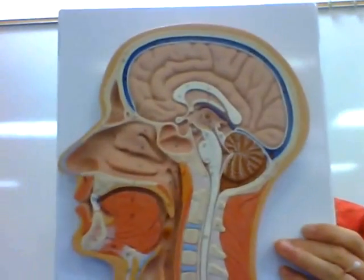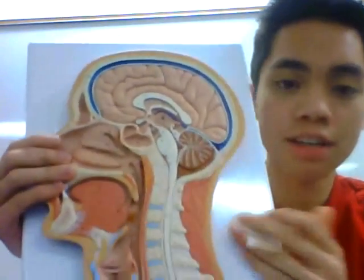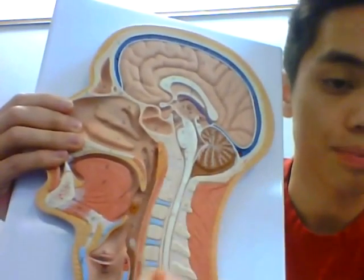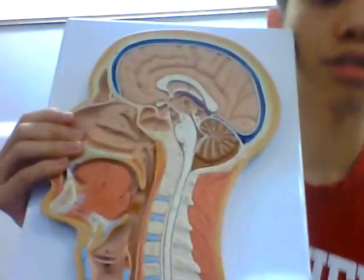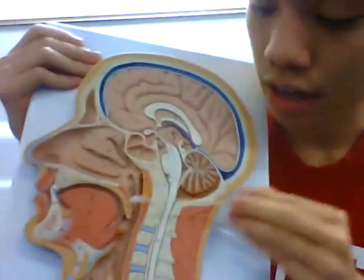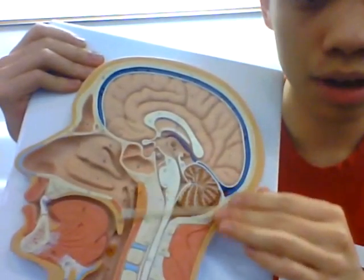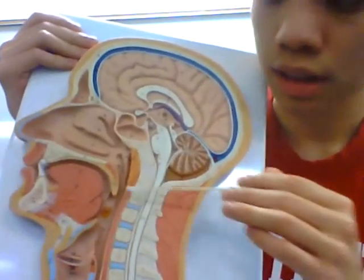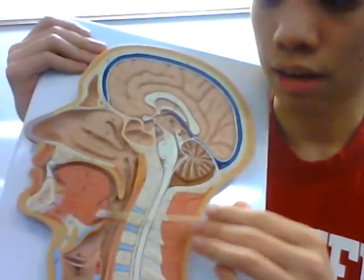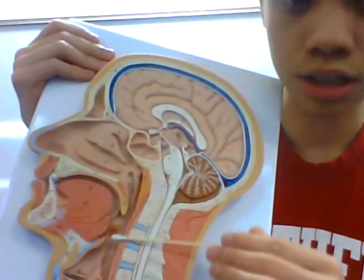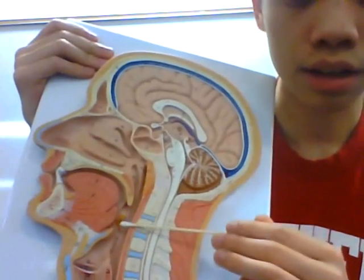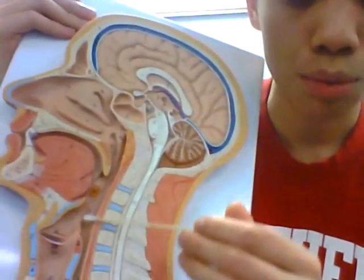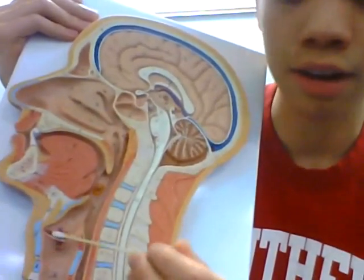Next we have the different areas of the pharynx. This whole back portion right here is called the pharynx, and it's split into three parts. The first one is the nasopharynx, which comes from up here and goes down to the end right here. Behind the oral cavity, this section is called the oropharynx. This bottom portion down here would then be called the laryngopharynx because this area is called the larynx.